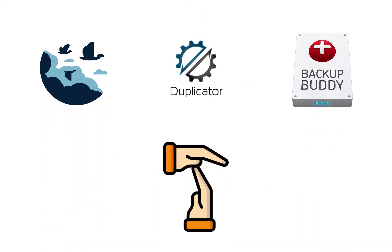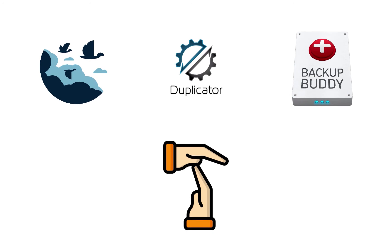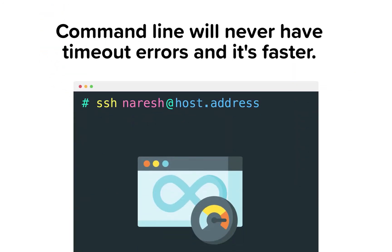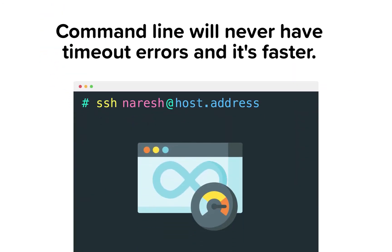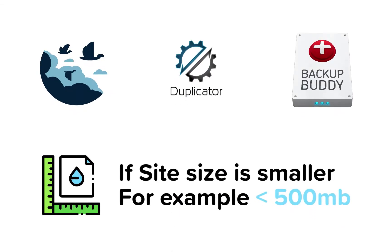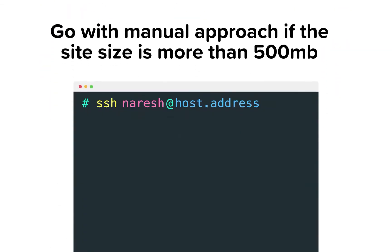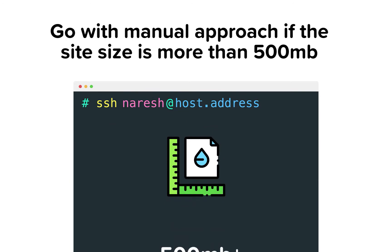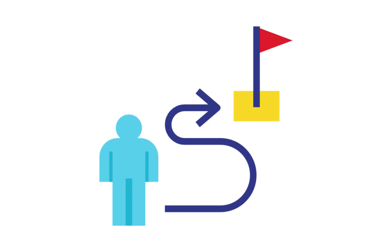Manual approach is error-prone based on your skill level and takes a lot more effort compared to a plugin-based approach. But plugin-based approach faces timeout errors if the site size is big. On the other hand, there will be no timeout errors in the manual approach. So a plugin-based approach is ideal if the site size is small, and manual approach is ideal for bigger sites.